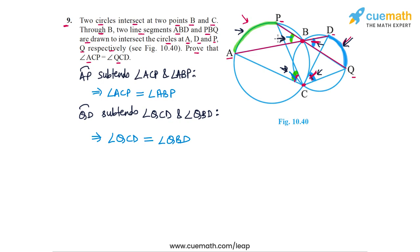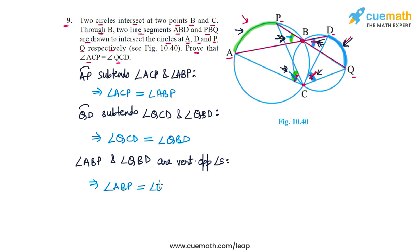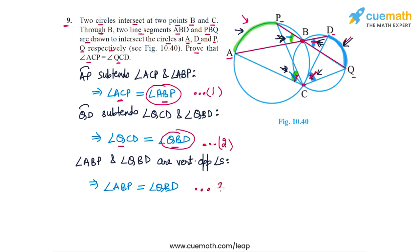Finally, as stated in the third step, we make use of the fact that angle ABP and angle QBD are vertically opposite angles, and hence they must be equal: angle ABP equals angle QBD. Calling these three results (1), (2), and (3): from (1), angle ACP equals angle ABP; from (2), angle QCD equals angle QBD; and from (3), angle ABP equals angle QBD. From these three relations we can conclude that angle ACP is equal to angle QCD, which is what we had to prove in question 9.